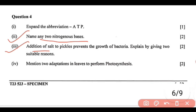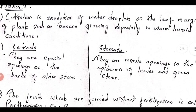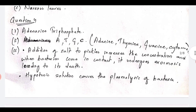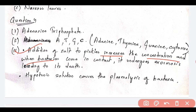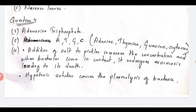Question number 3: addition of salt to pickles prevents the growth of bacteria — explain by giving two suitable reasons. Why does addition of salt to pickles prevent bacterial growth? It increases the concentration, and when bacteria come in contact, they undergo exosmosis leading to their death. Second, a hypertonic solution causes plasmolysis of bacteria. You can give these two reasons.